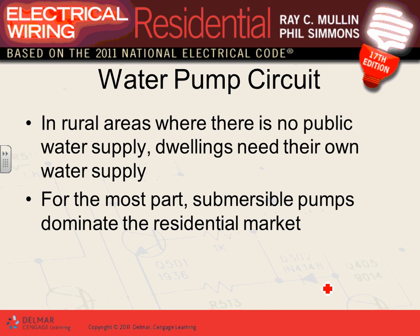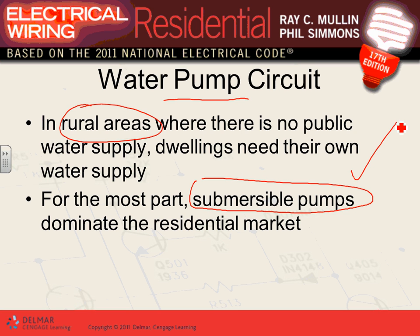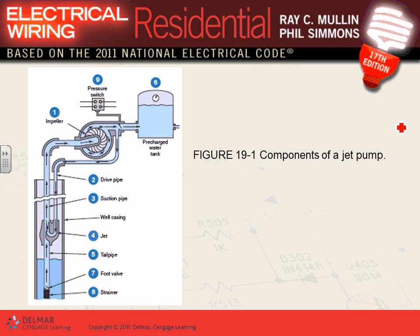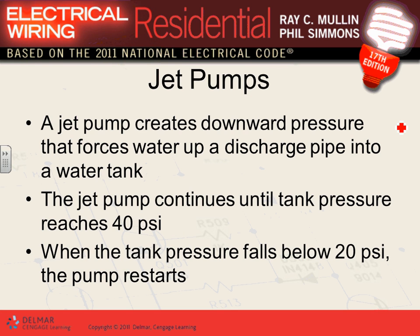Submersible pumps are the most common, especially in city water systems. Jet pumps are also used. These are the two main water pump technologies. For the jet pump, I want to emphasize two key values: the PSI settings — 20 PSI and 40 PSI — and the pressure tank that maintains pressure.